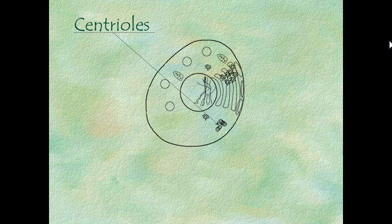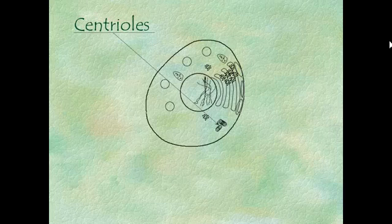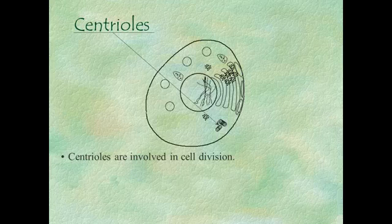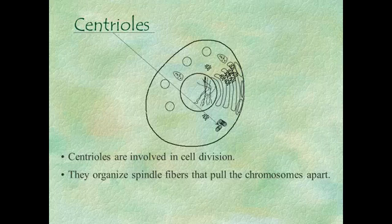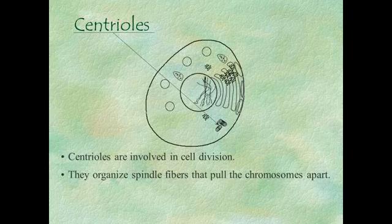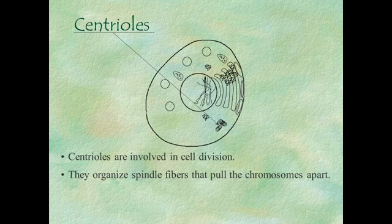The next structure is called centrioles. Centrioles are only found in animal cells, not plant cells. They're involved in cell division, and they are the anchor points for fibers that pull the chromosomes apart when the cell divides. I think of them as being kind of like little miniature fishing reels with fishing line attached to the chromosomes — the centrioles reel the chromosomes toward them. I want to be clear that this is not actually what happens, but it's a visual that might help you remember what they do. In a college-level course you'll find that's not at all how they work, but for our purposes it's an acceptable analogy.